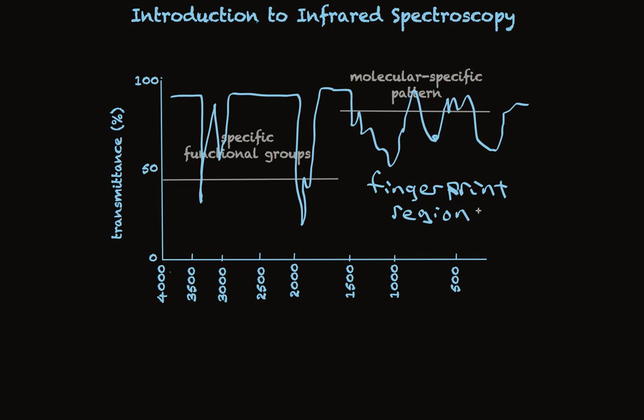So this is a very useful region in terms of structure identification, even though it doesn't tell us much, really, about the specific functional groups. On the other hand, that region on the left does tell us quite a bit about functional groups. You can look in tables and see specifically where one would expect certain functional groups to absorb. I'm going to give you some general information.